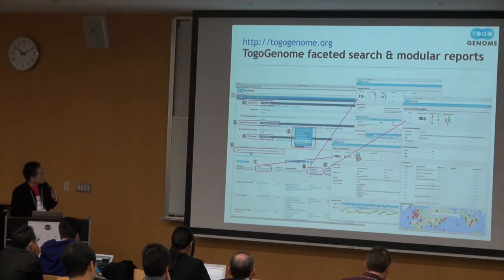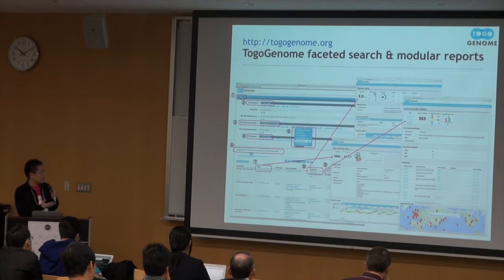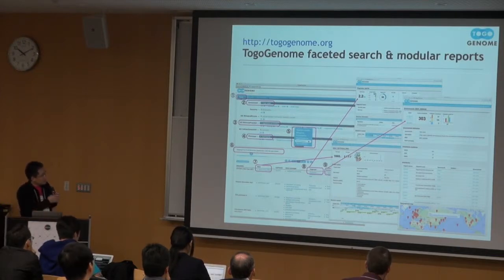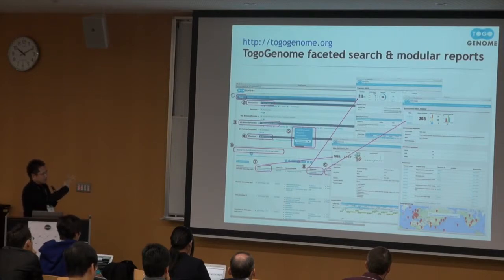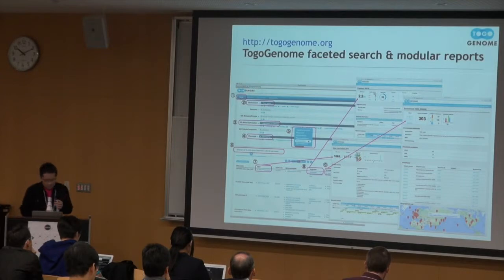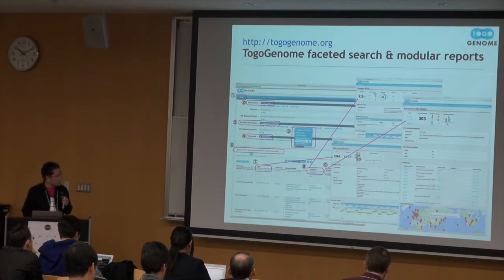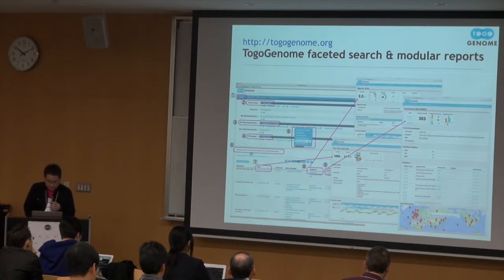You can narrow down the list of your genes of interest by environment, taxonomy, gene ontologies, or phenotypes, and you can see the report with the genes, organisms, or environment. All of this database is built on top of semantic web technology.